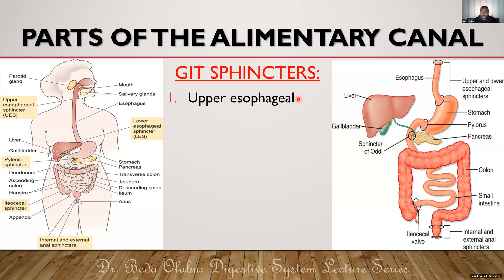That muscle is a tight one and makes the upper esophageal sphincter the narrowest part of the alimentary canal. To the extent that if someone swallows a foreign body and it manages to go through the upper esophageal sphincter — if it is not corrosive or dangerous — then you don't have to worry, because if something can go through the upper esophageal sphincter it can go through any other part of the GIT.